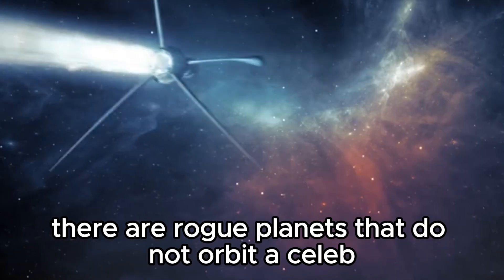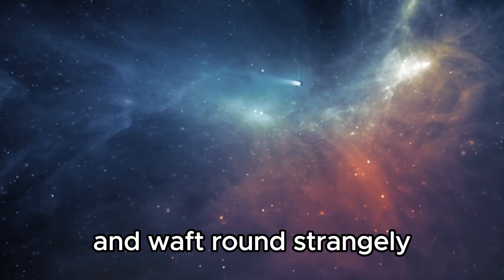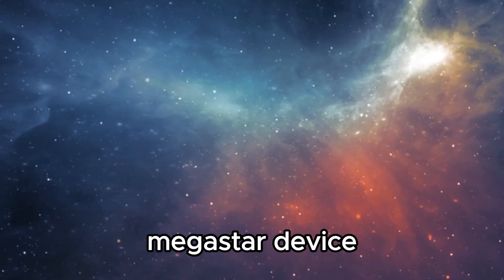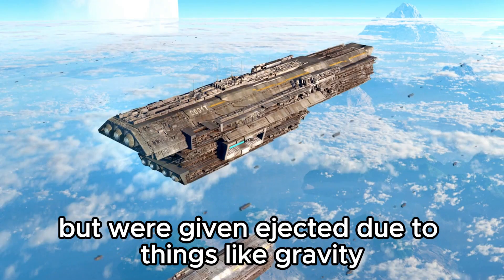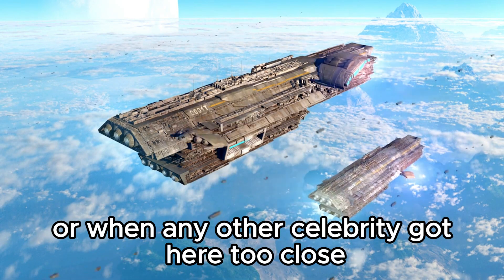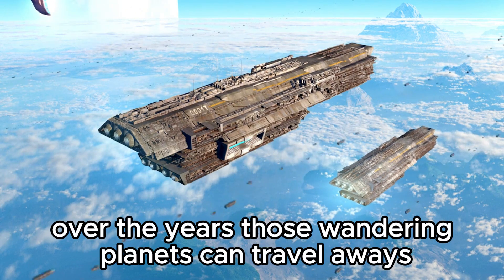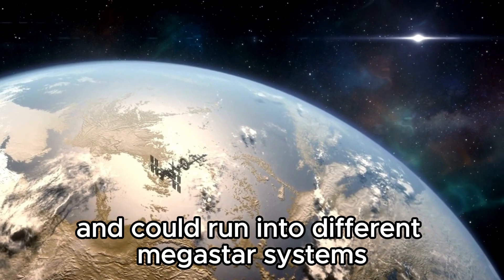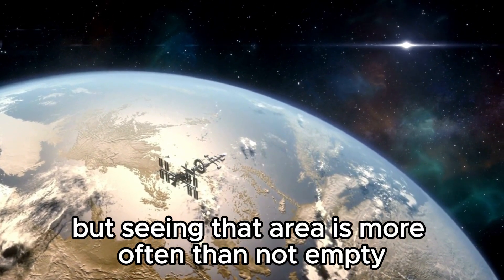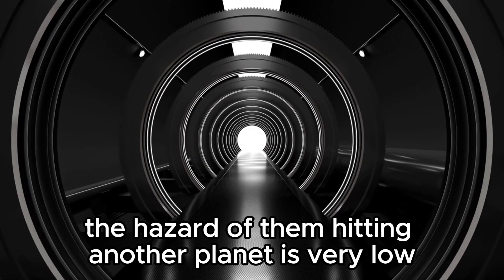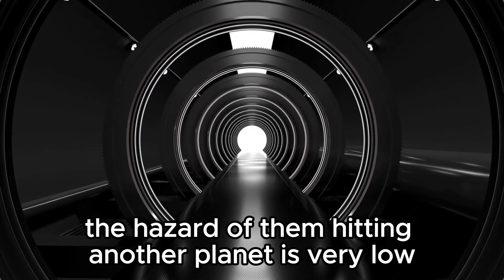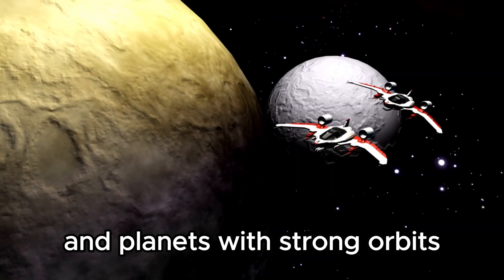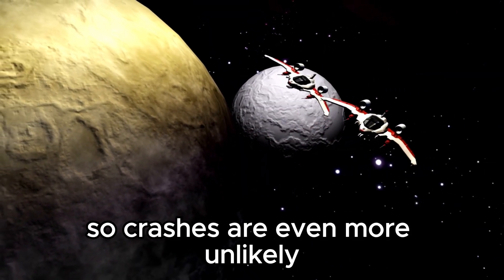Sometimes there are rogue planets that do not orbit a star and float around strangely. These planets used to be part of a star system but got ejected due to things like gravity or when another star came too close. Over the years, these wandering planets can travel far and could run into different star systems. But since space is mostly empty, the hazard of them hitting another planet is very low. Rogue planets are interesting, but compared to the number of stars and planets with stable orbits, crashes are even more unlikely.